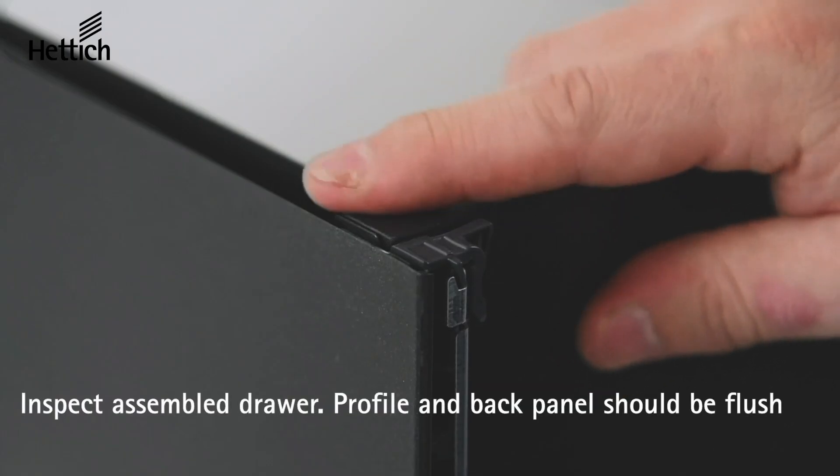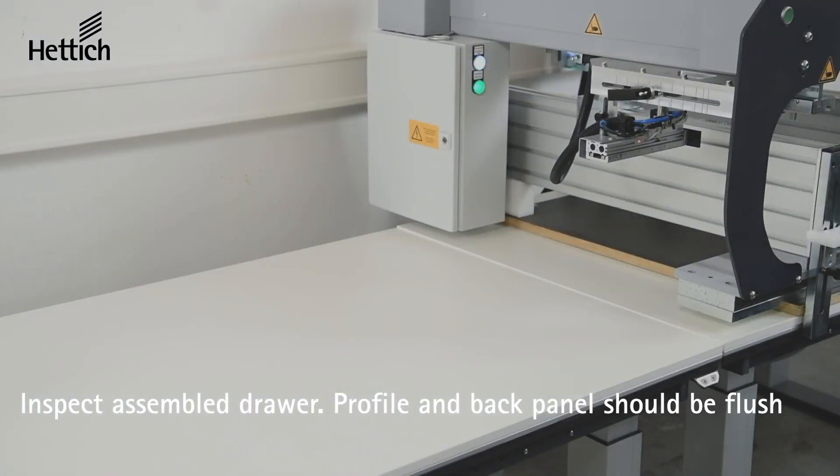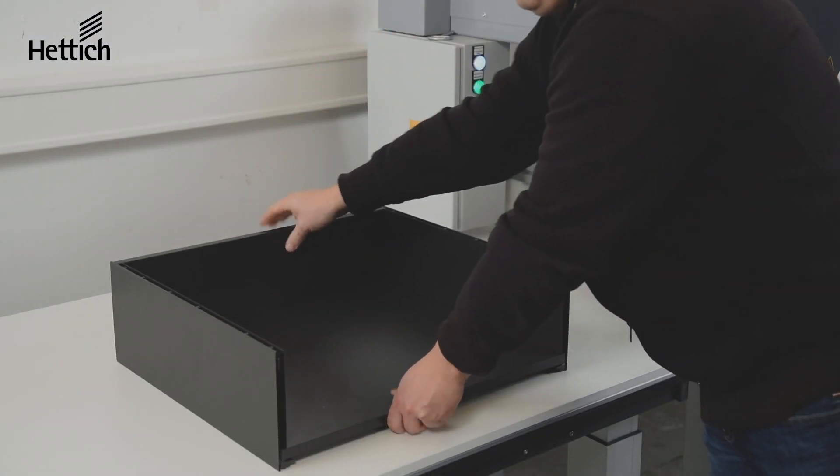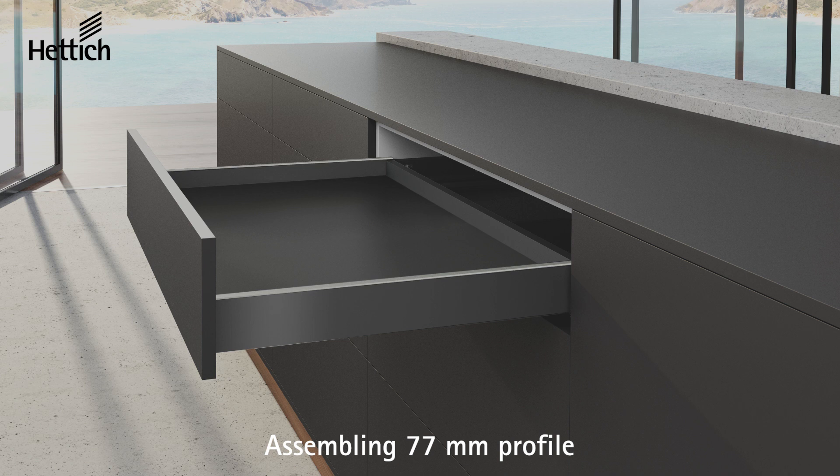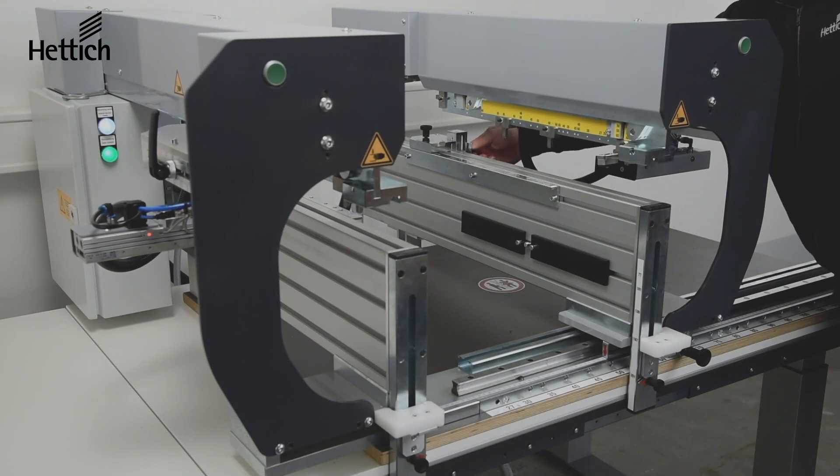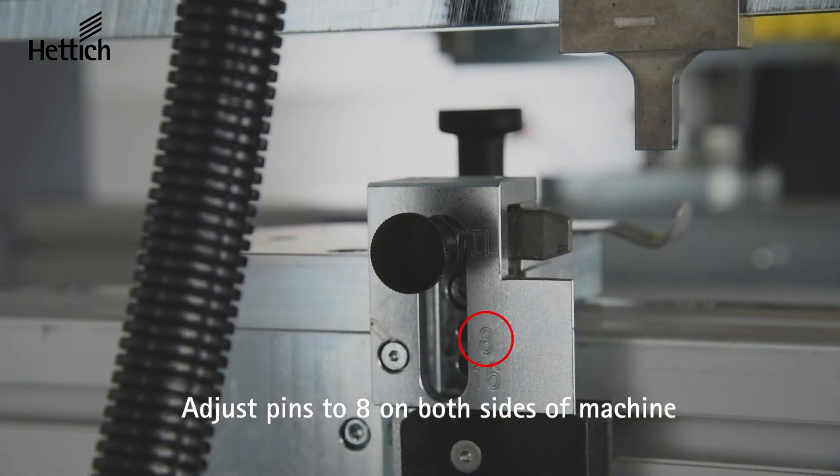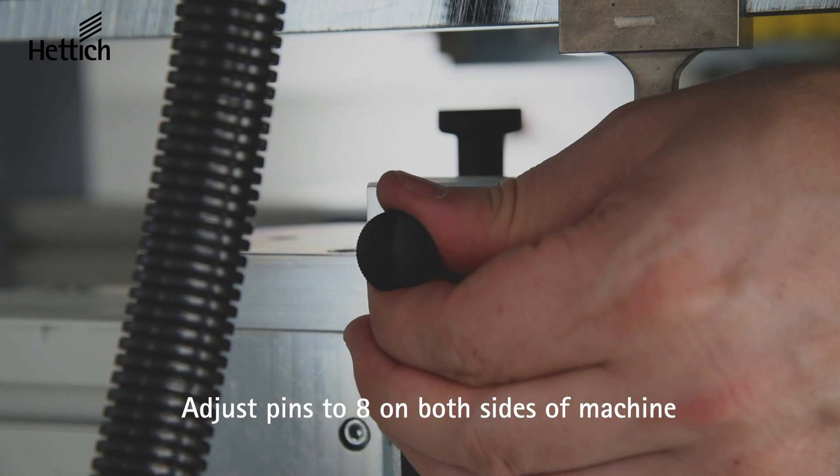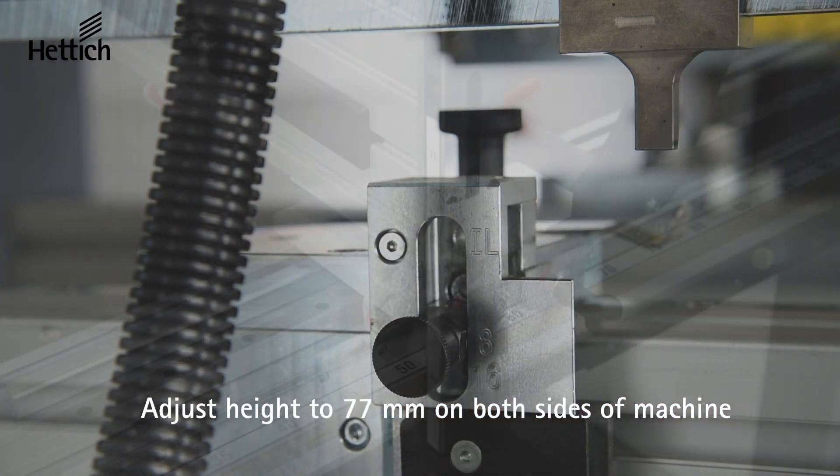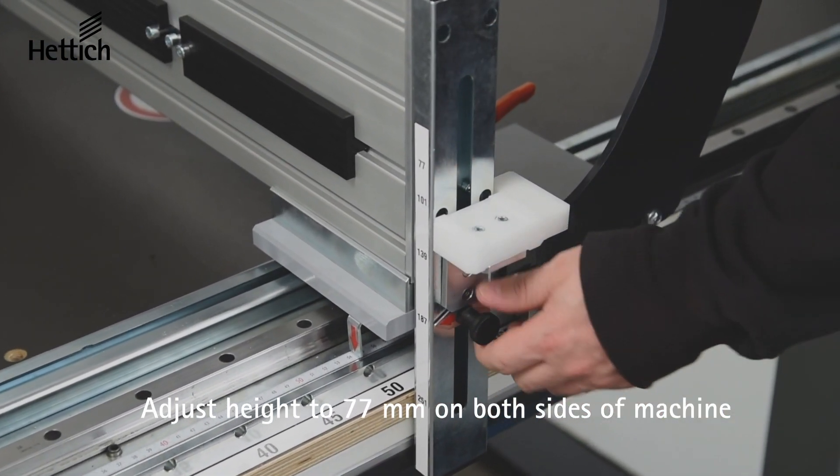If you are assembling a 77 millimeter profile, the AVENFIT 300 will work as well. You will need to adjust the profile height pins on the side of the machine to 8 millimeters on both sides, then adjust the back panel height of the machine to 77 millimeters again on both sides.